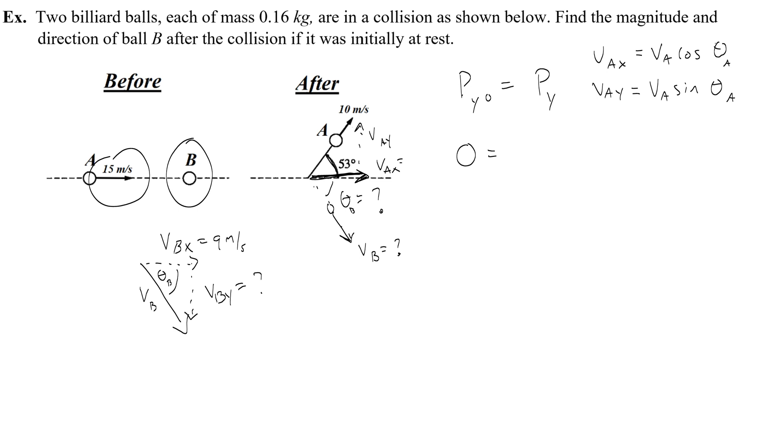Okay so I would have ma times vay, that upward momentum, plus mb times vby, the component of momentum that goes down. What do we want to find? We want to find vby so I would subtract ma vay and find vby by dividing both sides by mb. So negative ma vay over mb.